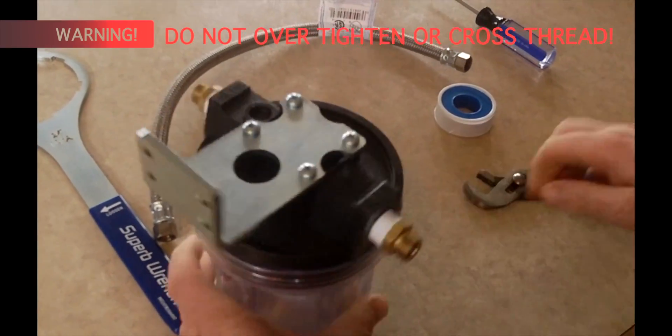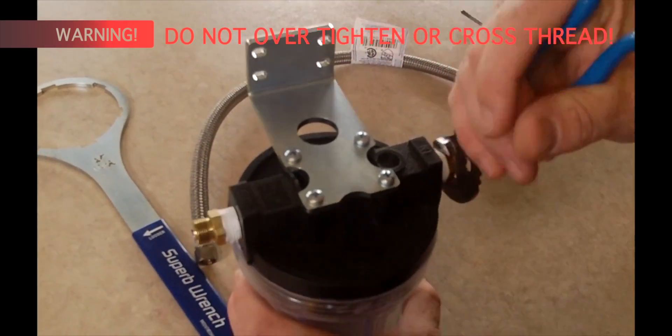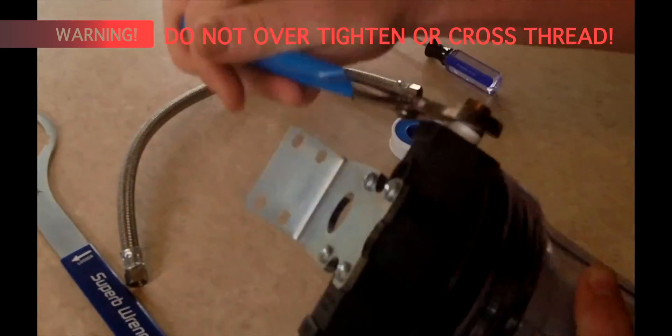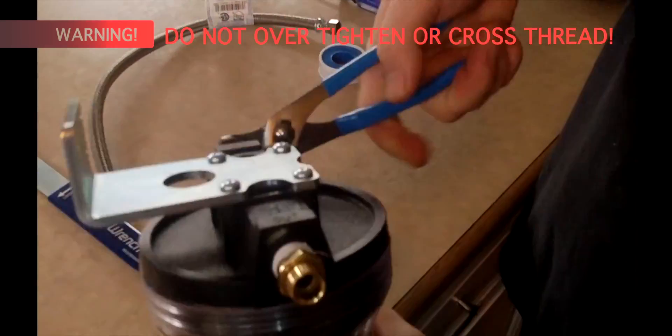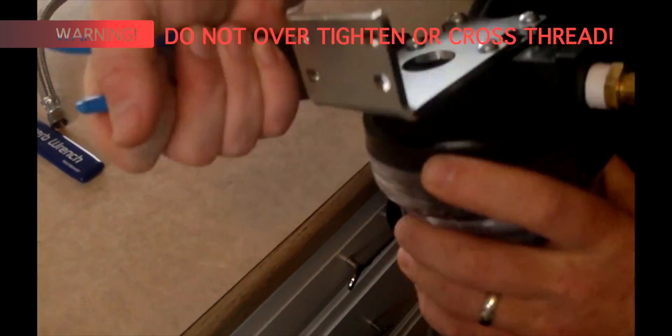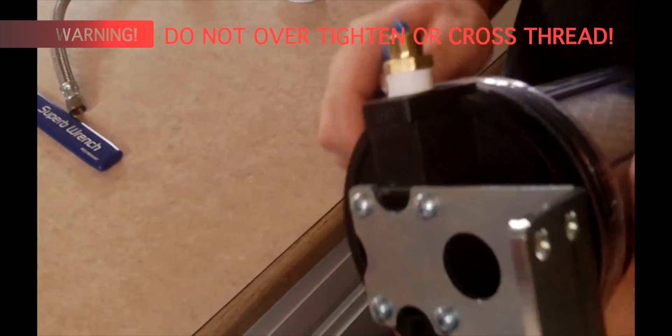Do not over tighten. You are putting brass into PVC pipe. Avoid expensive repairs. If the fittings do not thread easily, you may have cross threaded them.